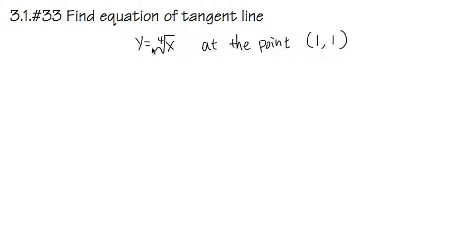Whenever you are trying to write an equation of a line, we need two things. The first is that we need the slope. The slope in our case is just the derivative, right? The slope of the tangent line is the derivative.